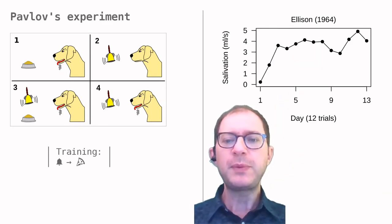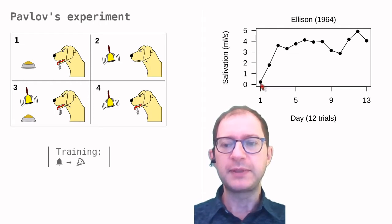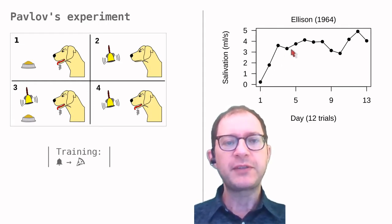This graph shows a replication of Pavlov's experiment, performed by Allison in 1964. As we can see, there is initially no salivation to the sound, but as experiences accumulate, salivation increases until it reaches an approximately stable level.